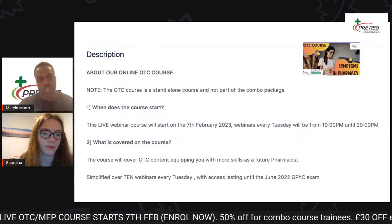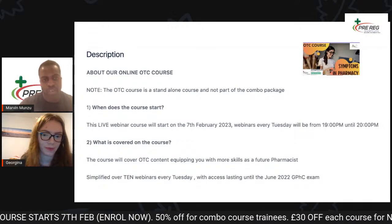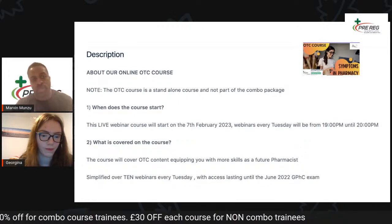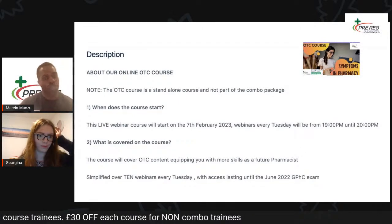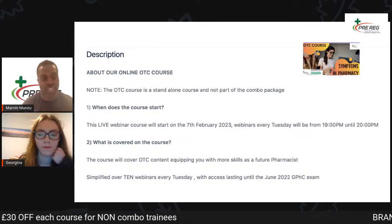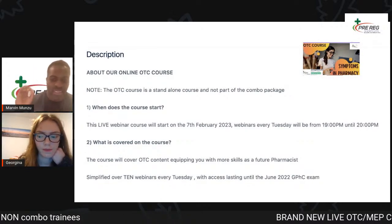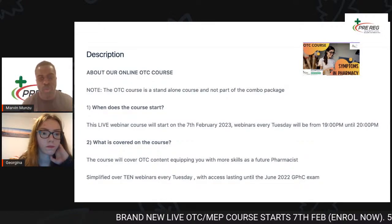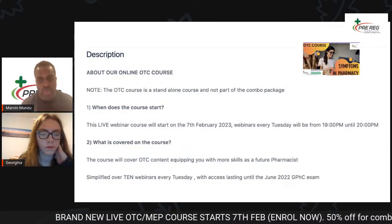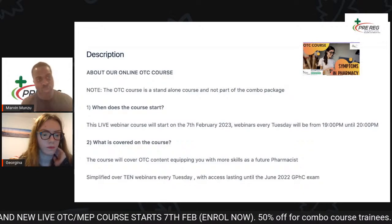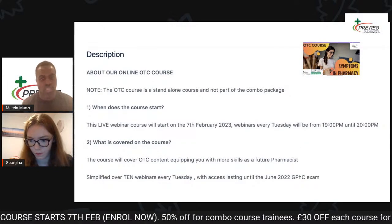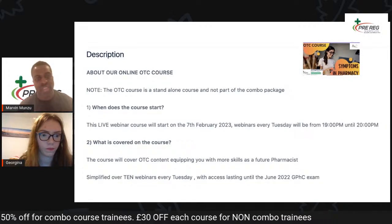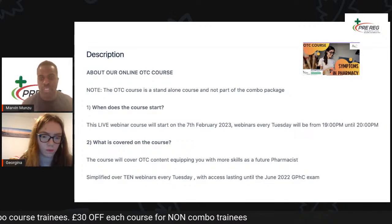Good news is all of you on the combo course get 50% off. Those of you on the combo course, we'll do something to support you as well — you're going to get 30 pounds off each course. We want to make sure that everyone is able to get something from this course. We're really making it easy and cheap. Remember, it's a live course as well — not just an automatic course or one that's been recorded. You'll be able to do this course in real time like we're doing right now. It's about 10 weeks, so we're going to give you a lot of information on content.